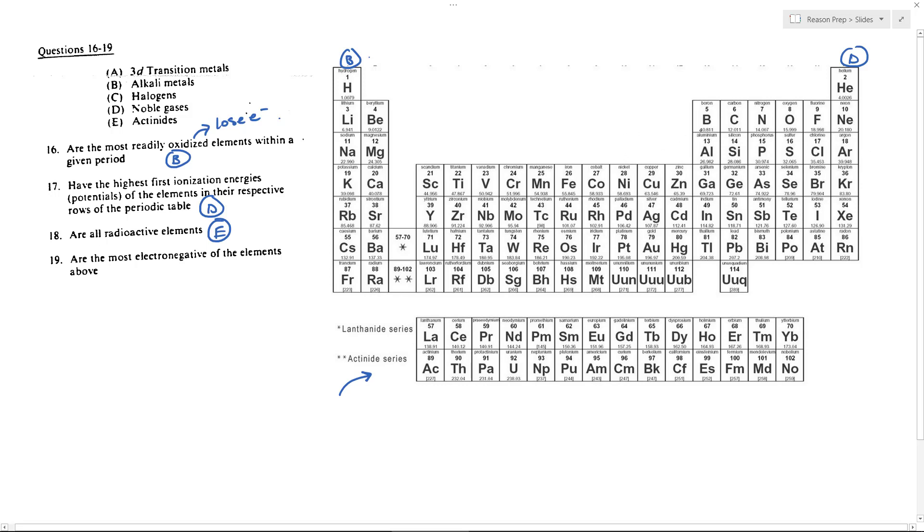The trend is electronegativity increases as you go to the right, except noble gases for the same reason that we discussed in number 17 are not going to have a high electronegativity at all. They don't want to attract electrons. They are happy where they are.